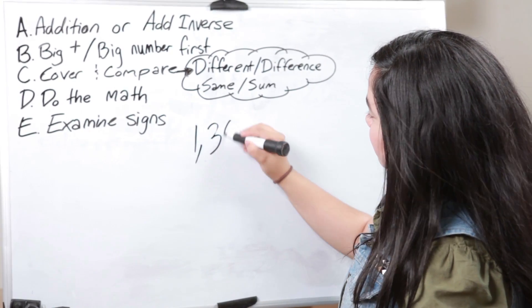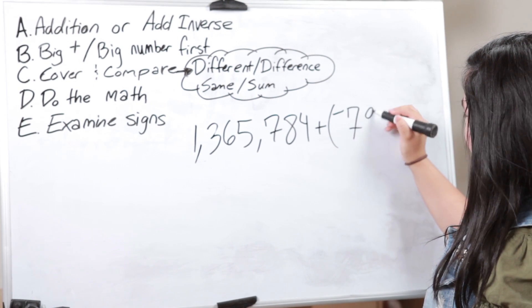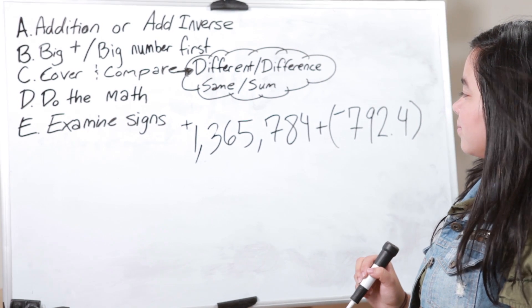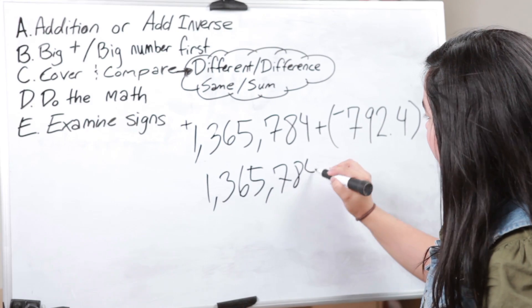A, B, C, D, E — use it in your time of need. Let's do 1,365,784 minus 790.2.4. A — Addition. We're going to change that subtraction sign to addition and then put a negative in front of the 790.2.4. B — big number first, and it already is. C — cover and compare. The signs are different, so set up a subtraction problem with the big number on top, which is the million, and put 792.4 on the bottom.